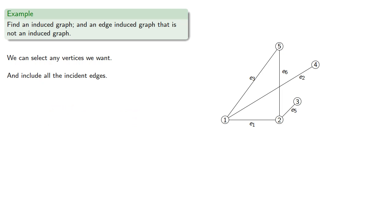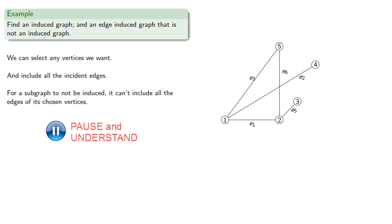For a subgraph not to be induced, it can't include all the edges of its chosen vertices. So let's deselect a few edges and drop the vertices, and that gives us our edge-induced subgraph.